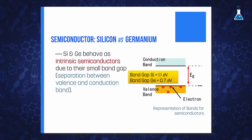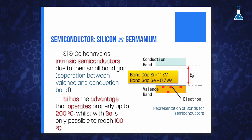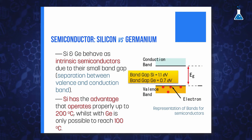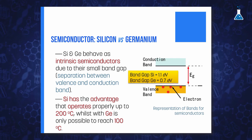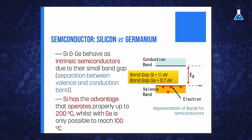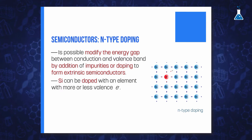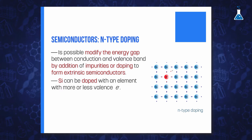Silicon has the advantage over germanium in that it operates properly up to temperatures of 200 degrees Celsius, in contrast with 100 degrees Celsius, at which germanium loses its semiconductor properties. As discussed in this course, it is possible to influence the energy gap between the bands by the addition of impurities, or doping, to form extrinsic semiconductors.